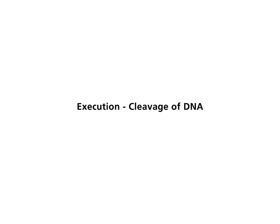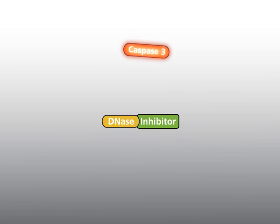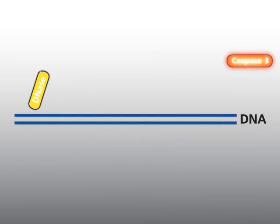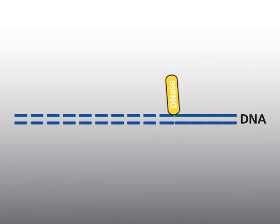Execution — cleavage of DNA: Important steps of the execution phase are the cleavage of DNA and the cytoskeleton. In the normal cell, DNase is complexed to an inhibitor and is inactive. After initiation and activation of the caspase cascade, active Caspase 3 cleaves this inhibitor. The activated DNase then cleaves DNA at regular intervals of 180 base pairs. In between, histone proteins of nucleosomes protect the DNA against DNase cleavage.